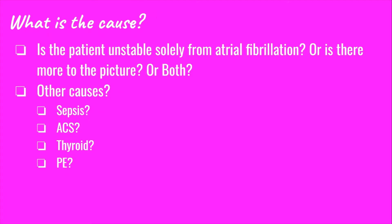When thinking about your patient with atrial fibrillation with a rapid ventricular response, you need to ask yourself if your patient is unstable from solely atrial fibrillation, or is there more to the picture causing the instability. Some of these causes can be sepsis, as the heart rate will go up as a compensatory mechanism. Other causes include ACS, thyroid issues, and pulmonary embolism, among others.